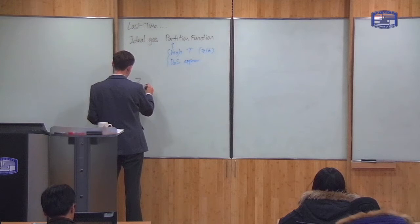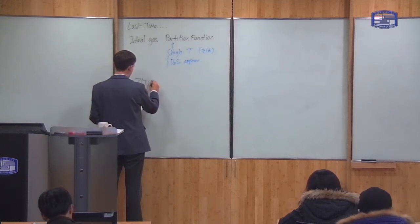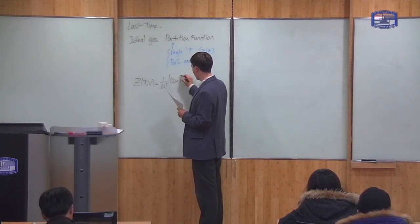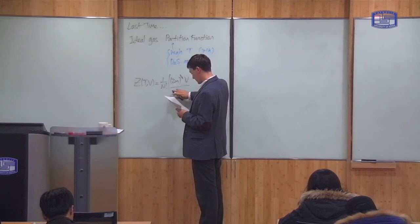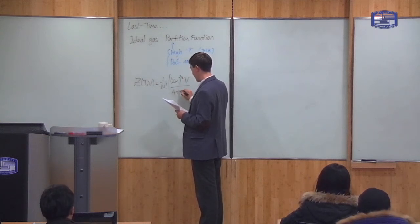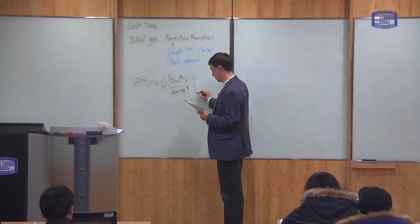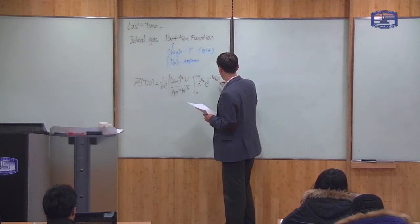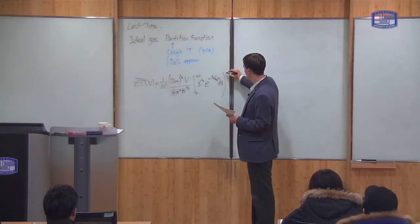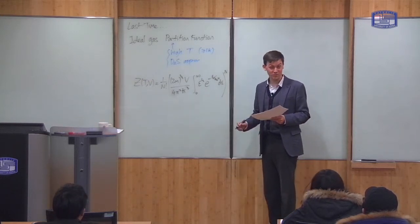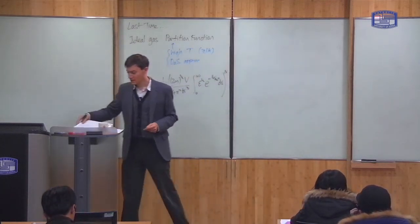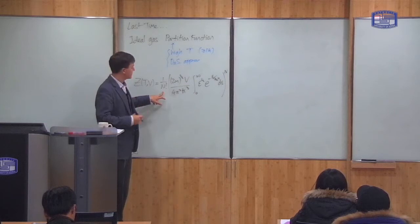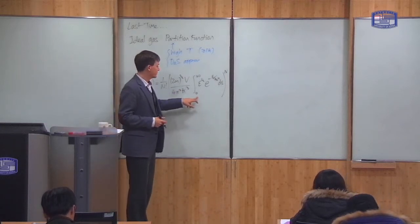Last time we derived the partition function Z, which is a function of T and volume, as 1 over N factorial, times (2M)^(3/2) times volume, divided by 4π² ℏ³, times the integral from 0 to infinity of ε^(1/2) e^(−ε/kBT) dε, all to the power N. The volume dependence comes from the density of states. The 1/N! is from the indistinguishability of particles, and the integral is from the density of states approximation.